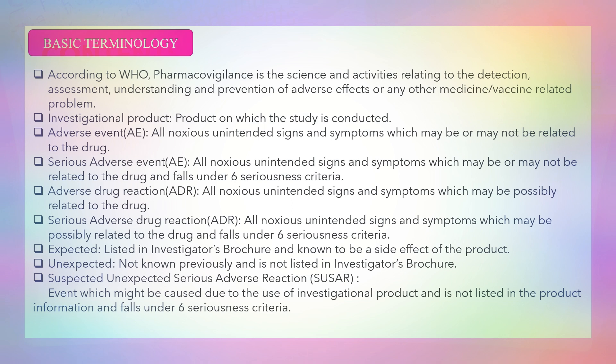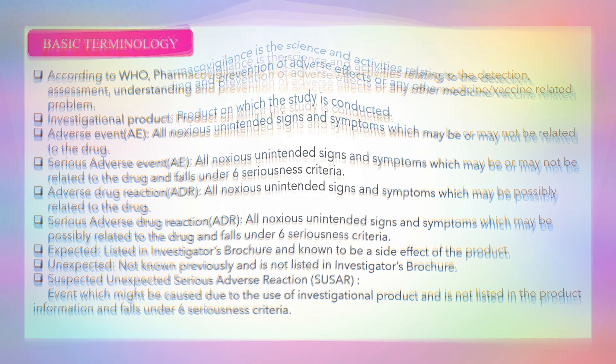The only difference between an adverse event and adverse drug reaction is its relatedness to the drug. An expected event is listed in the investigator's brochure and known to be a side effect of the product, whereas an unexpected event is not known previously and is not listed in the investigator's brochure. An unexpected serious adverse reaction is an event which might be caused due to the use of the investigational product, is not listed in the product information or investigator's brochure, and falls under six seriousness criteria. These are some of the basic terminology you need to understand in pharmacovigilance.